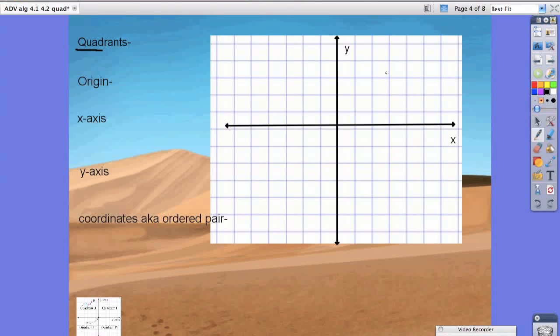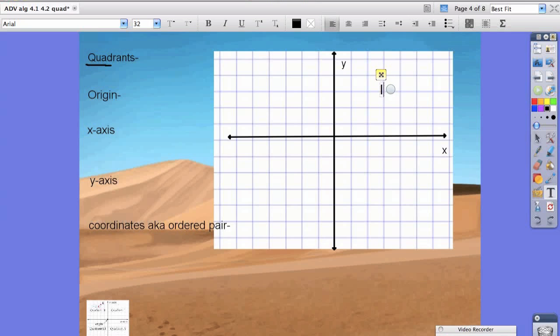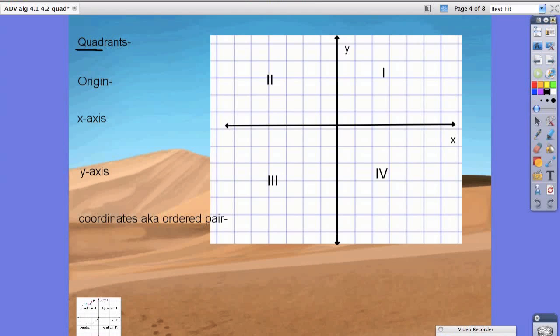This quadrant is labeled quadrant one and we're writing in Roman numerals. From there we actually label them in counterclockwise order. So that was one, this is two, this is three, and this is quadrant four. That's how we determine what quadrants our points lie in.